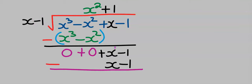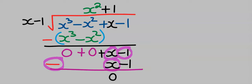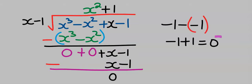Continuing the long division: x minus x gives 0, and minus 1 minus minus 1 gives 0.